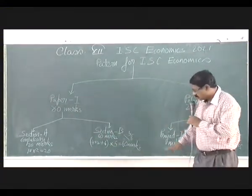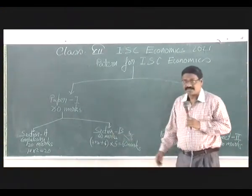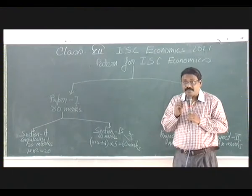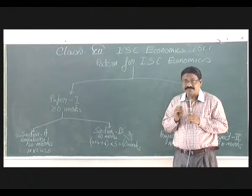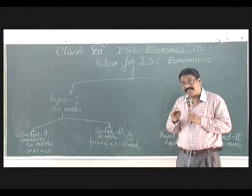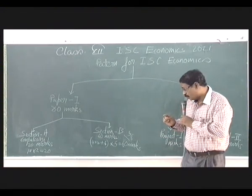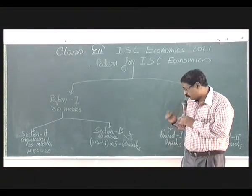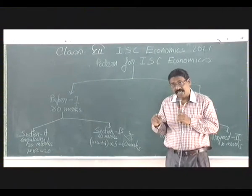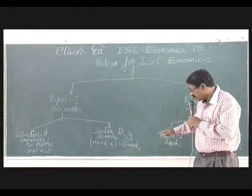Section B is 60 marks. Each question is of 12 marks. Again, this 12 is divided into 3 parts — it is 4 plus 4 plus 6, which is 12, into 5. That comes to 60 marks.